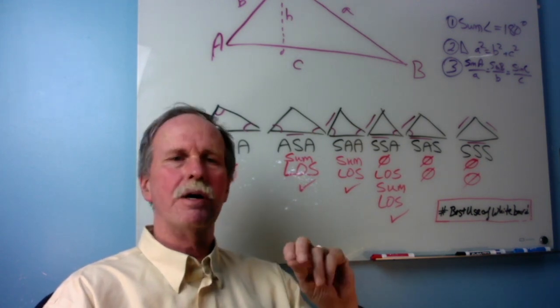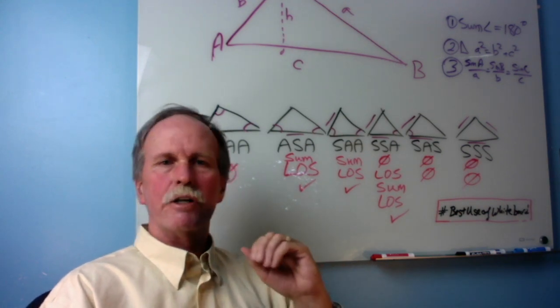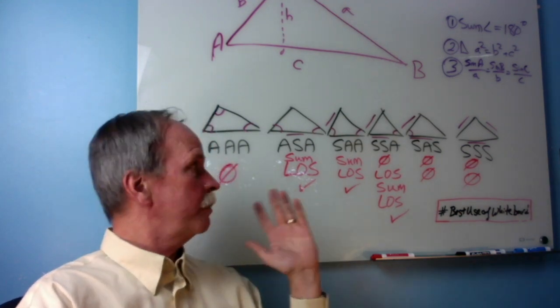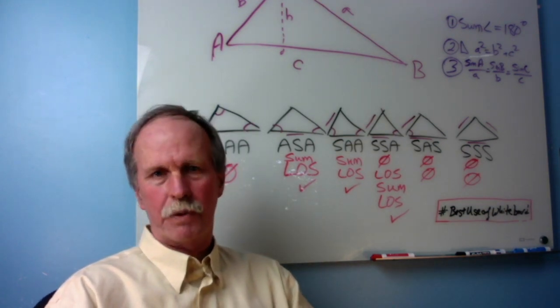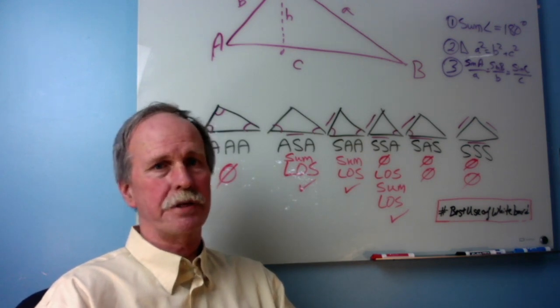We talked about the law of sines. We talked about nomenclature of triangles, and we gave you six triangle types to try and solve for. Remember, to solve, we need all three angles and all three sides.